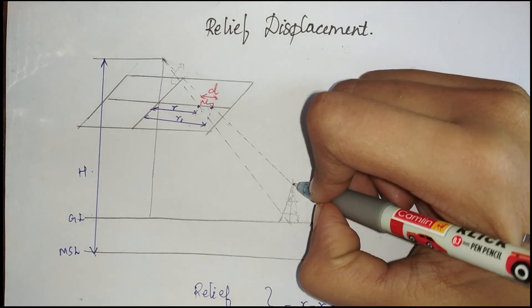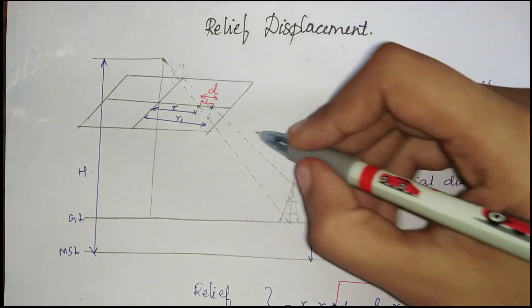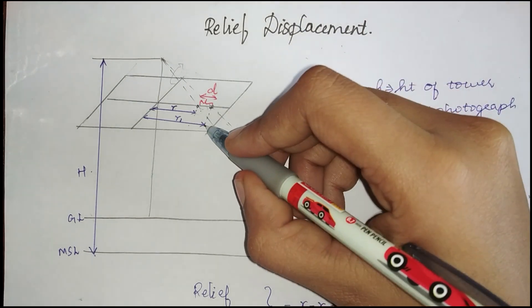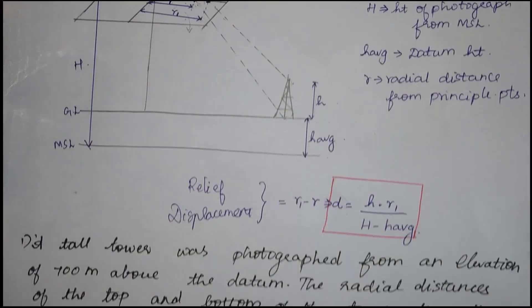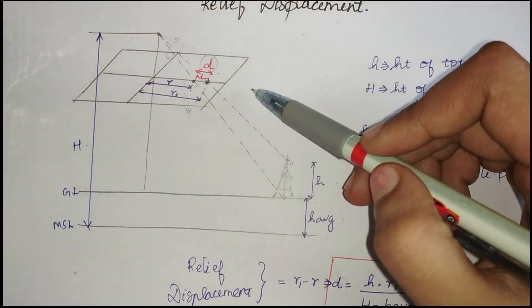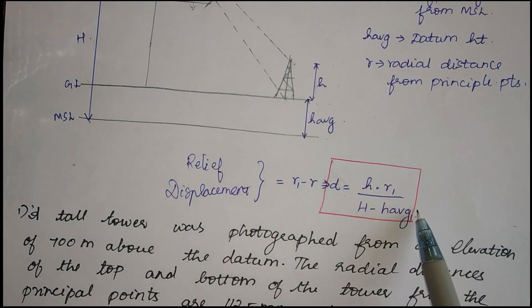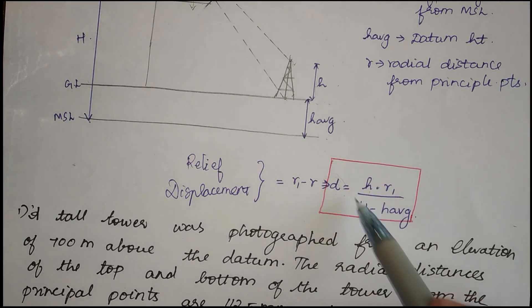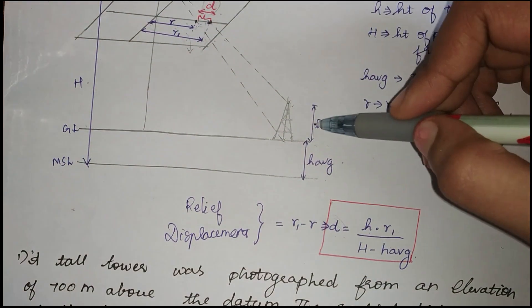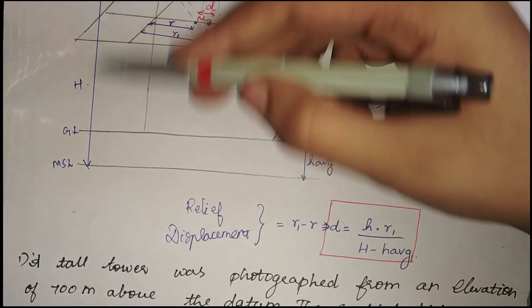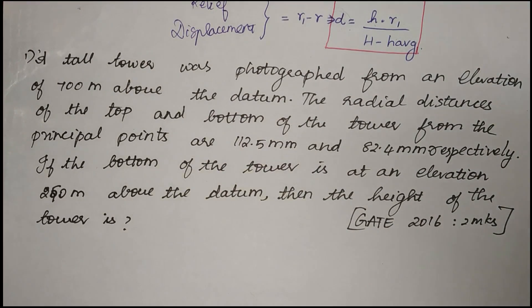The radial distance corresponding to the bottom of the tower is r, and the one corresponding to the top is r1. The difference between r1 and r gives the relief displacement. The commonly used formula is: relief displacement d equals h (height of tower) times r1 (radial distance to the top) divided by (H minus h_average), where H minus h_average is the flying distance.